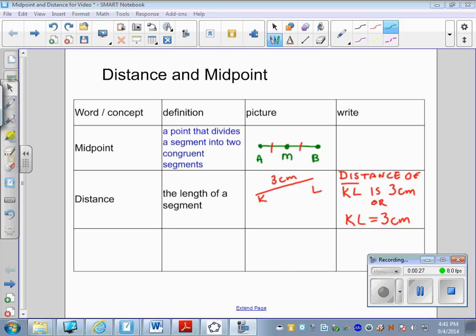Okay, welcome back. Take a look underneath the right column, the R-I-G-H-T. Distance says distance of KL is 3 centimeters or KL is equal to 3 centimeters. I need you to look at the notation there. KL in the first one has a bar above it. That is read, the distance of the segment KL is 3 centimeters. Or, notice the KL the second time does not have a bar. There's an equal sign. That's read, the measure of KL is equal to 3 centimeters.